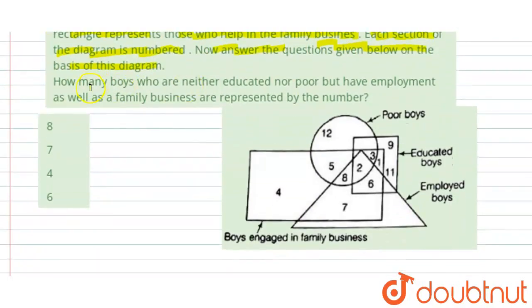Now we have a question given here. That is, how many boys who are neither educated nor poor but have employment as well as a family business are represented by the number? And we are having four options here: Option A, B, C and D.